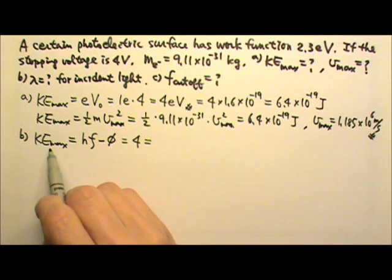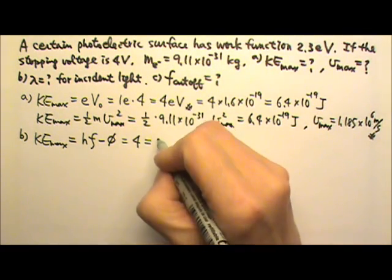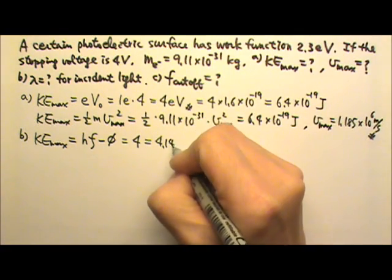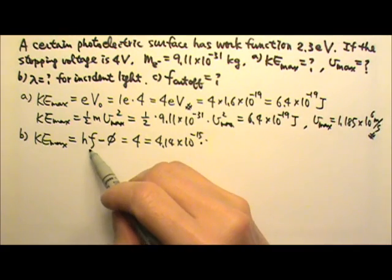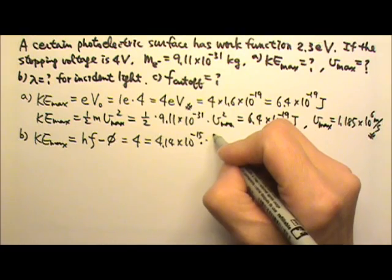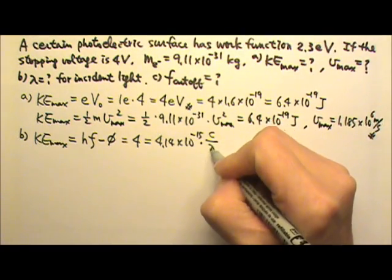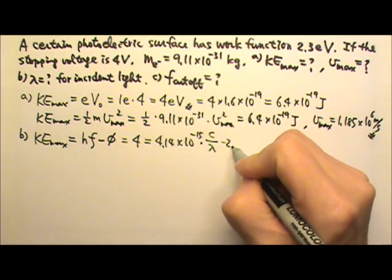Maximum kinetic energy is 4 eV. h = 4.14×10⁻¹⁵ eV·s. The frequency is f = c/λ. So 4 eV = hc/λ - 2.3 eV.